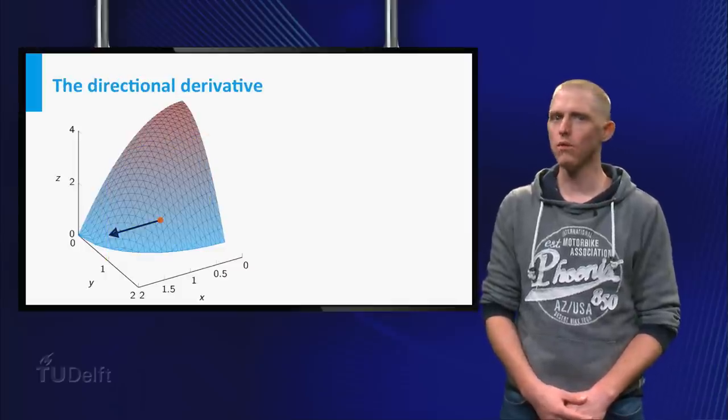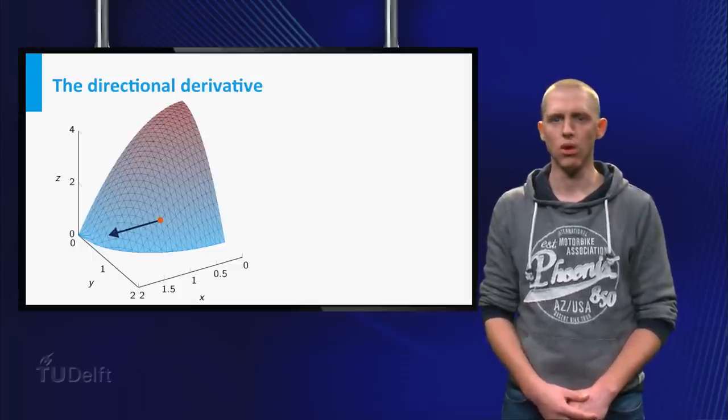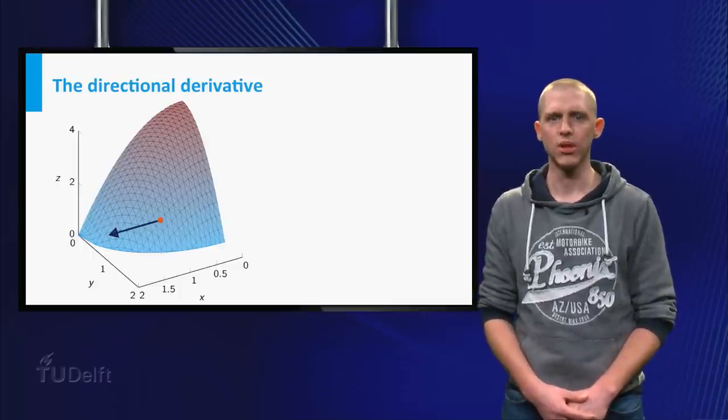If you want the slope of a function in the x direction, you basically want the slope in the direction 1, 0. Similarly, the y direction is given by 0, 1.